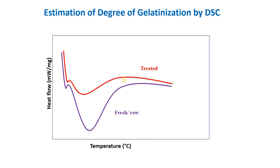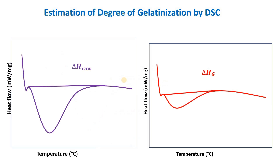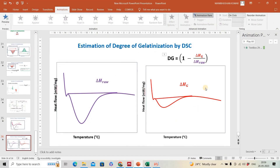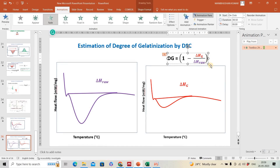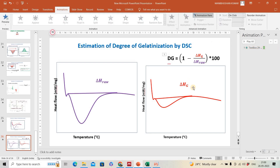To calculate the degree of gelatinization, we use two DSC graphs — one for the fresh sample and one for the treated sample. We calculate the separate enthalpy of gelatinization for each, then use the formula: degree of gelatinization equals one minus (enthalpy of treated divided by enthalpy of fresh), multiplied by 100 to express it as a percentage.